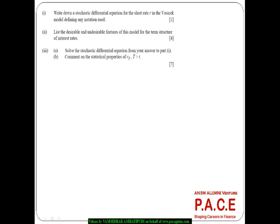Now I want to solve this stochastic differential equation. We have drt = a(μ - rt)dt + σdBt. To solve this, I will start by defining a substitution: let ut = rt · e^(at). Applying Itô's lemma, we get ∂u/∂rt = e^(at), ∂²u/∂rt² = 0, and ∂u/∂t = a · e^(at) · rt.